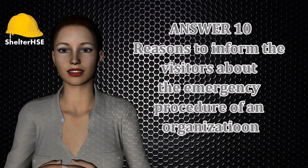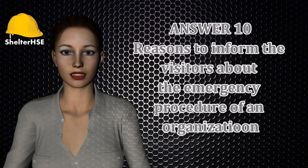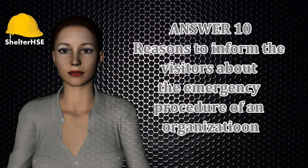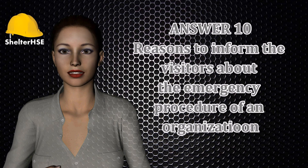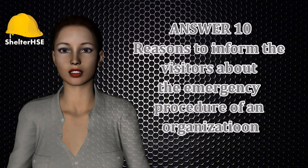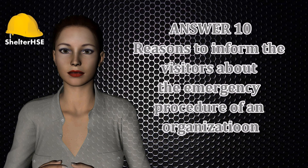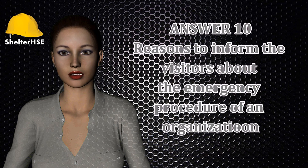Question ten: Outline why visitors to a workplace should be informed of an organisation's emergency procedures. They can act appropriately in the event of an emergency, thereby minimising the risk to themselves and other persons. The provision of such information will assist the employer in complying with the Management of Health and Safety at Work Regulations 1999, relating to ensuring the safety of persons other than employees on the premises. The general duty under Section 3 of HSWA is also relevant, as is the employer's common law duty of care. Visitors are not aware of workplace processes, the hazards associated with workplace activities, or emergency escape routes.